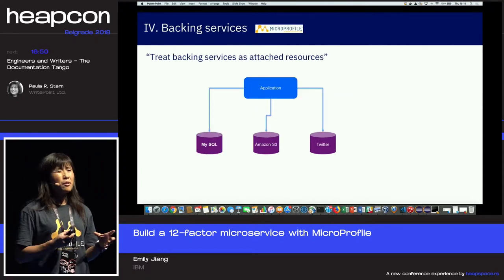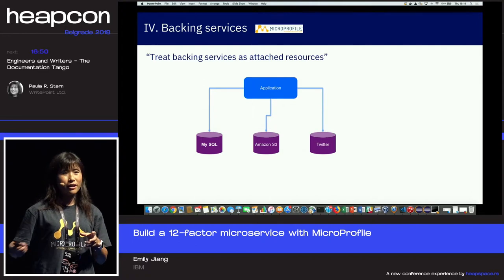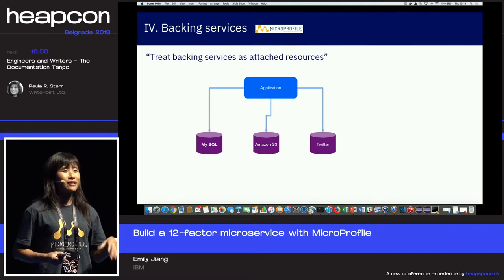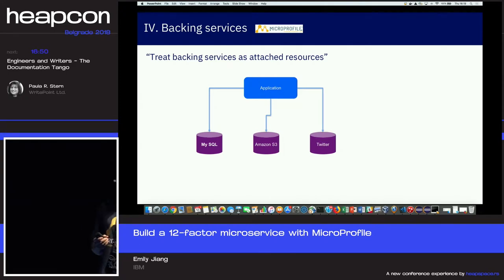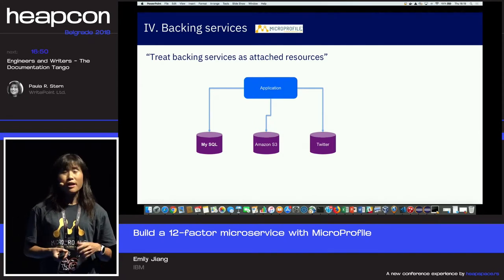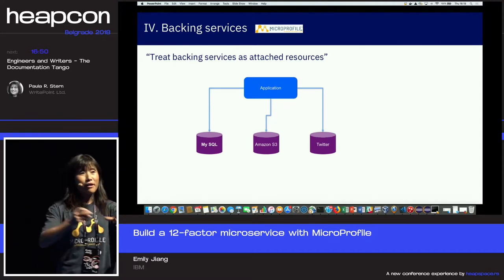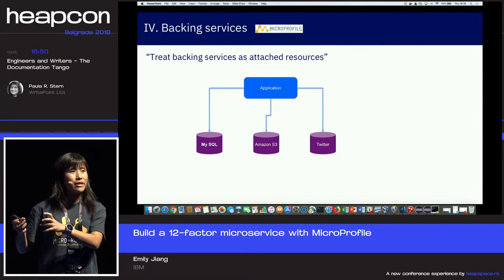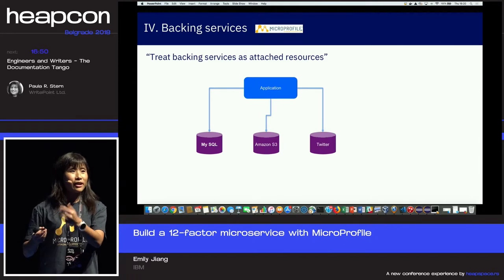The fourth factor is Backing Services. Nothing is isolated in the microservice world — you have to interact with other microservices. If you deploy a standalone microservice that doesn't talk to others, it's unlikely to be useful. You normally need to interact with an underlying database or call other services, and all those backends should also be configured. For example, if Twitter is an external resource and it goes down, you can swap in another communication channel such as Facebook.